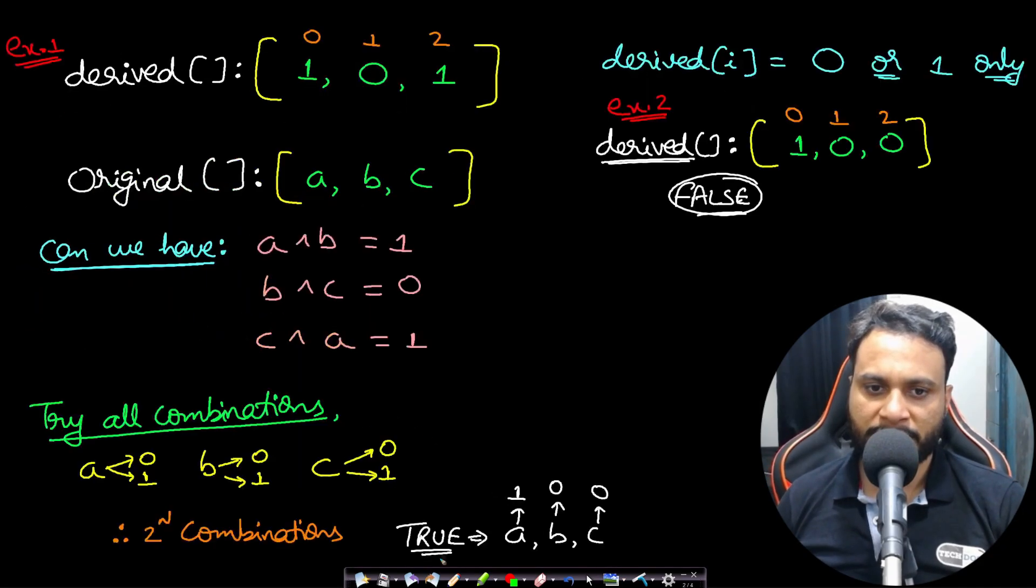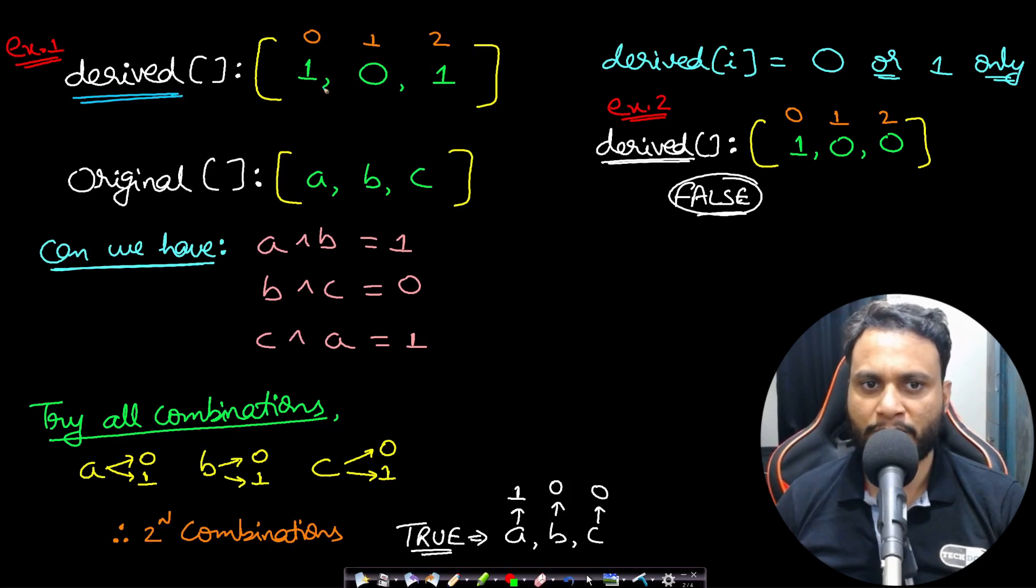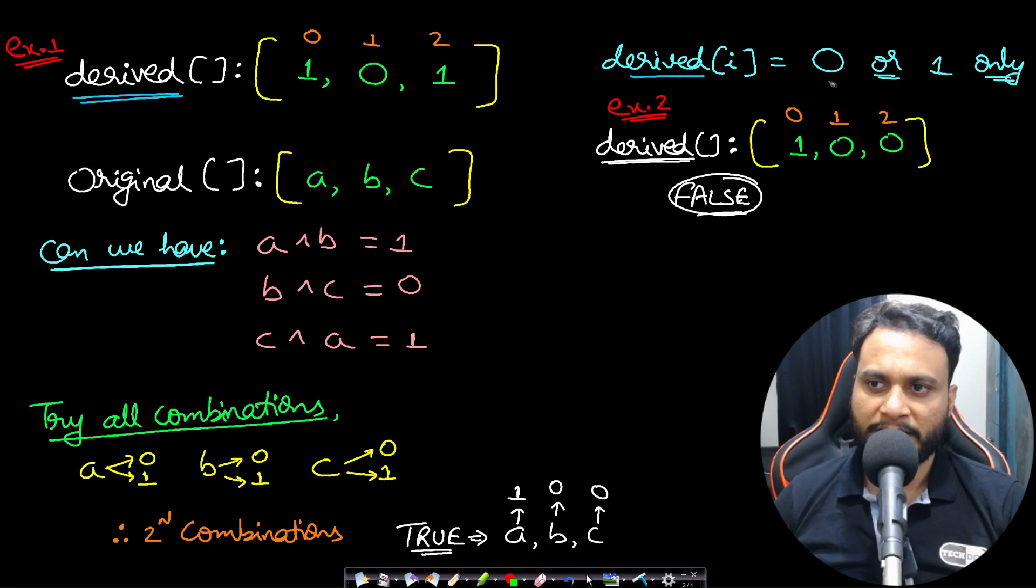Let's now look at an example for better understanding. In this case, let's assume that our derived array is of size 3: [1, 0, 1]. Now we know that from the problem statement, derived[i] is either 0 or 1 only, and let's say that our original array is [a, b, c].